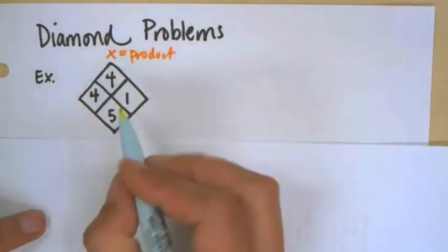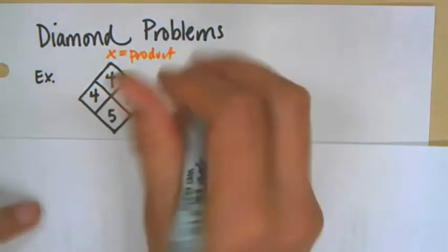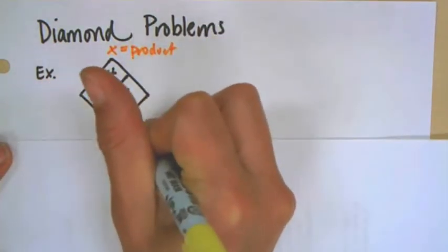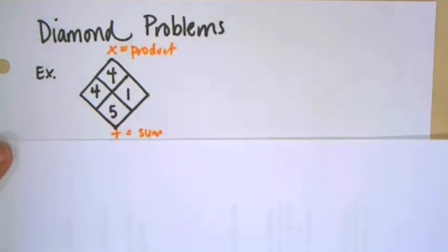It equals to four. And then these two numbers, when you find the sum of them, it's equal to five.